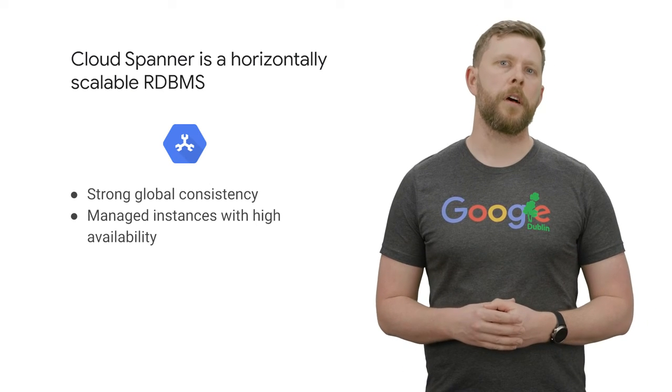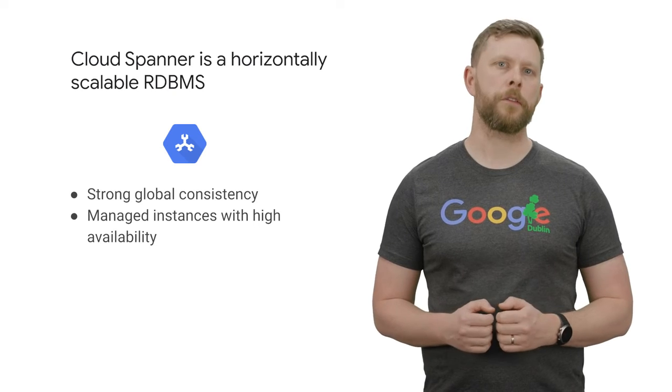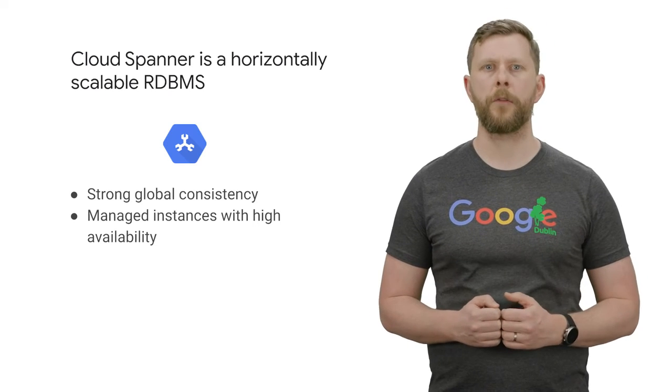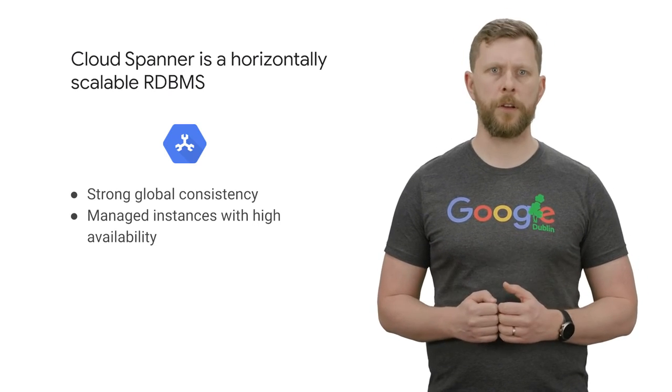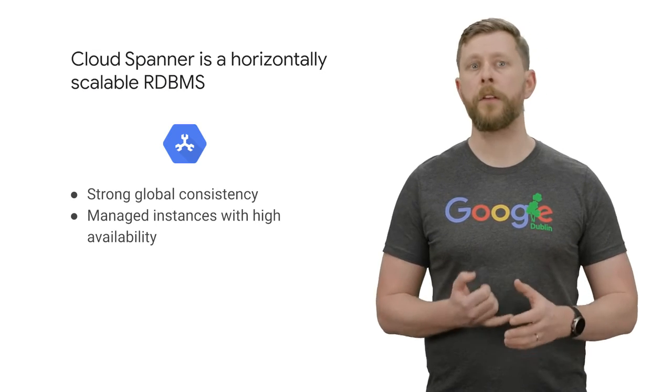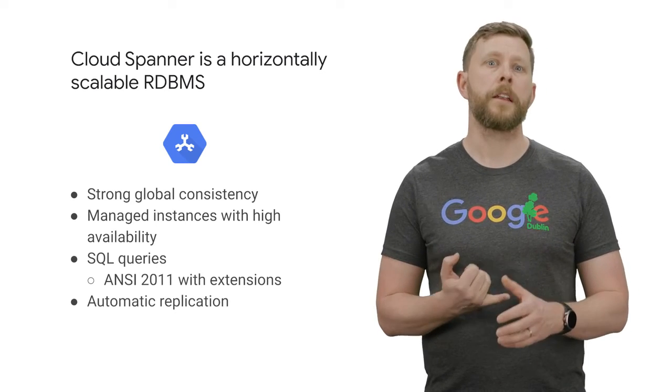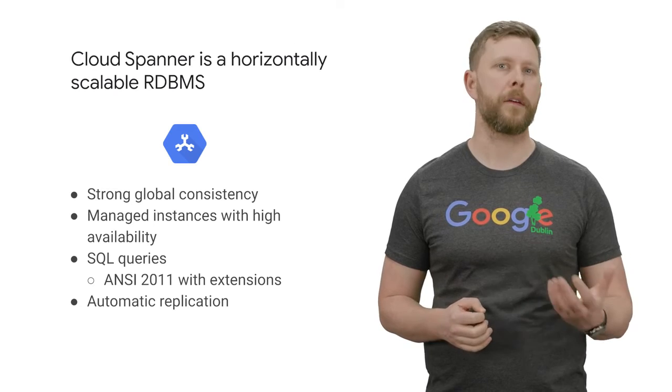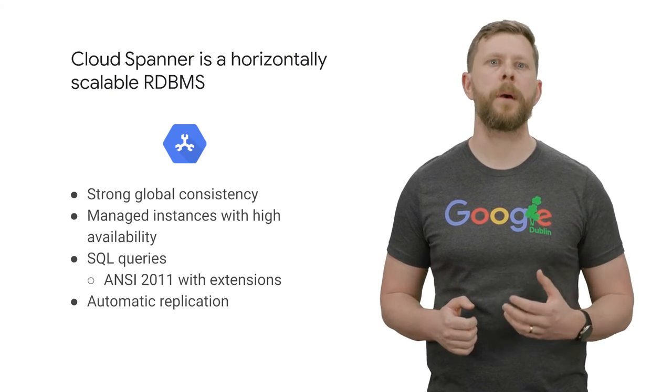If Cloud SQL does not fit your requirements because you need horizontal scalability, consider using Cloud Spanner. It offers transactional consistency at global scale, schemas, SQL, and automatic synchronous replication for high availability, and it can provide petabytes of capacity. Consider using Cloud Spanner if you have outgrown any relational database, are sharding your databases for high throughput performance, need transactional consistency, global data and strong consistency, or just want to consolidate your database. Natural use cases include financial applications and inventory applications.